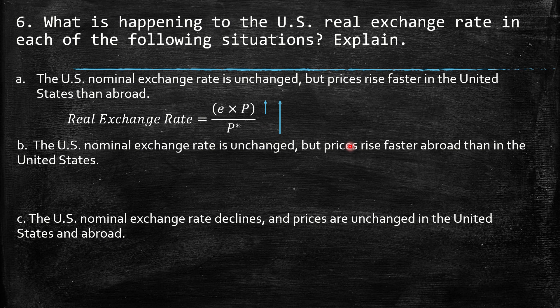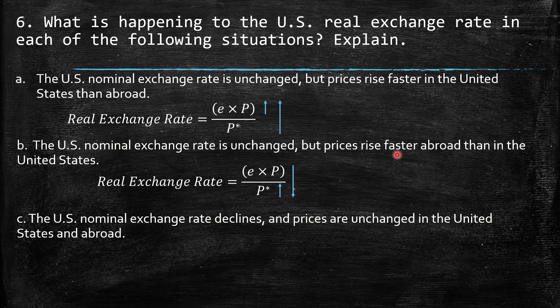Part B: the US nominal exchange rate is unchanged but prices rise faster abroad than in the United States. Here the foreign prices increase faster, so we have an increase in the denominator larger than other changes — as a consequence, a decrease in the real exchange rate.